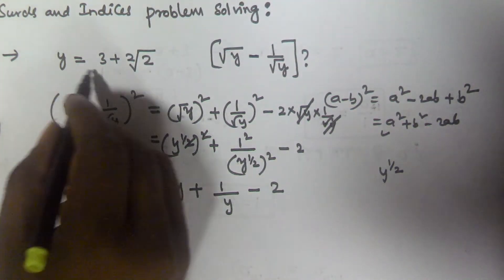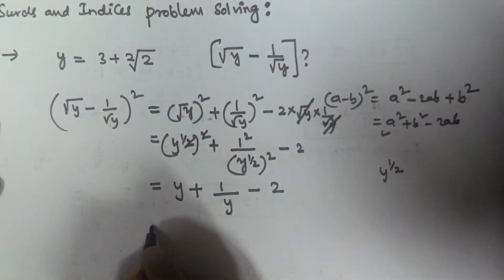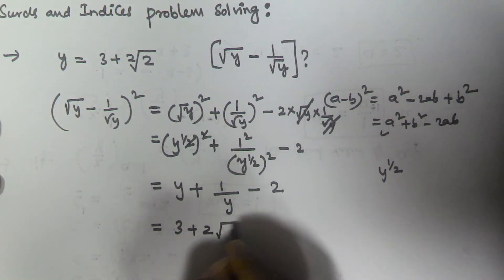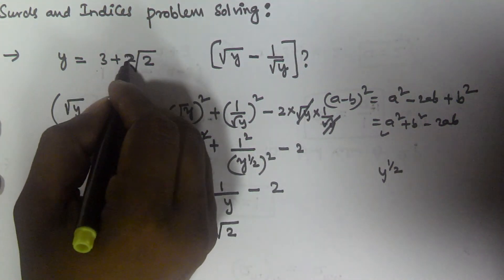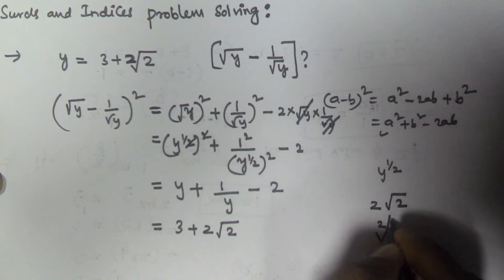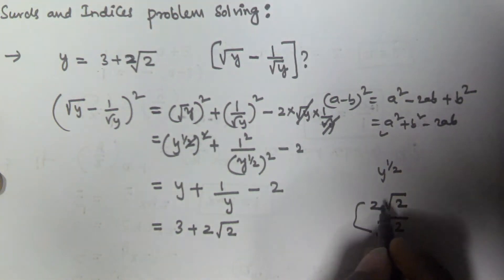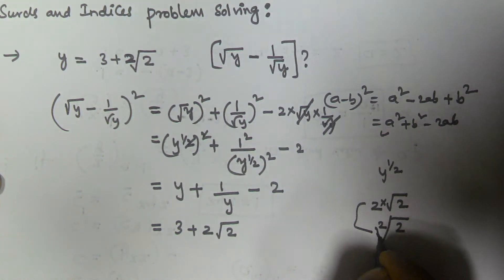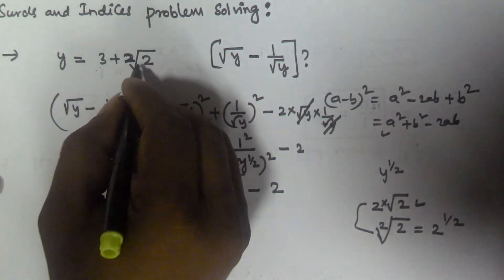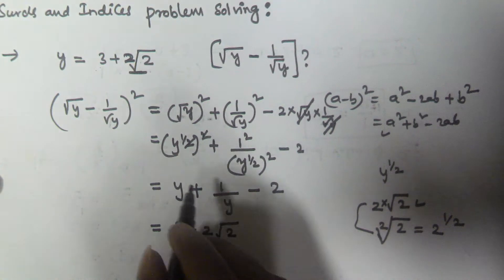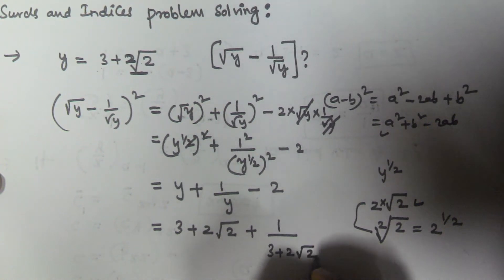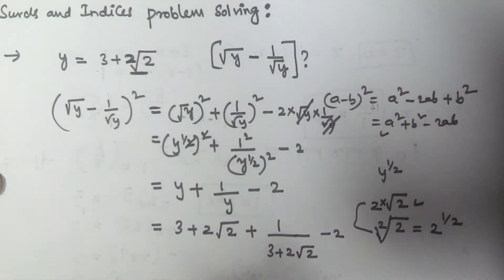Now we have given y equals 3 plus 2 root 2, so we substitute that value. The expression becomes 3 plus 2 root 2 plus 1 by (3 plus 2 root 2) minus 2. Note that the 2 root 2 in the y value and the 2 inside any square root are different. The LCM here is 3 plus 2 root 2.